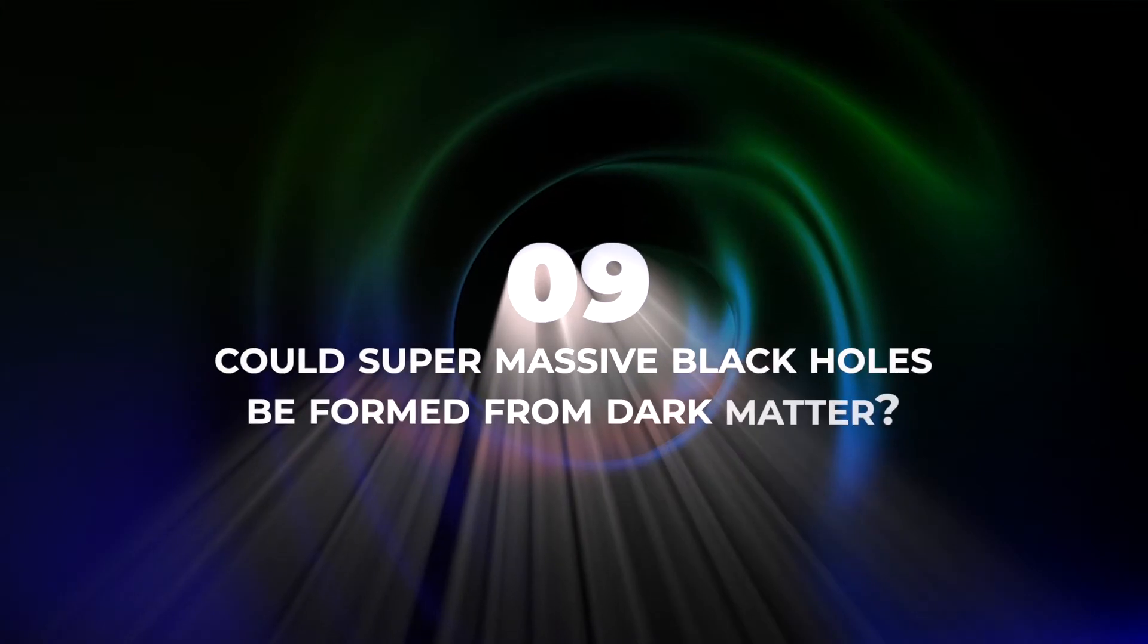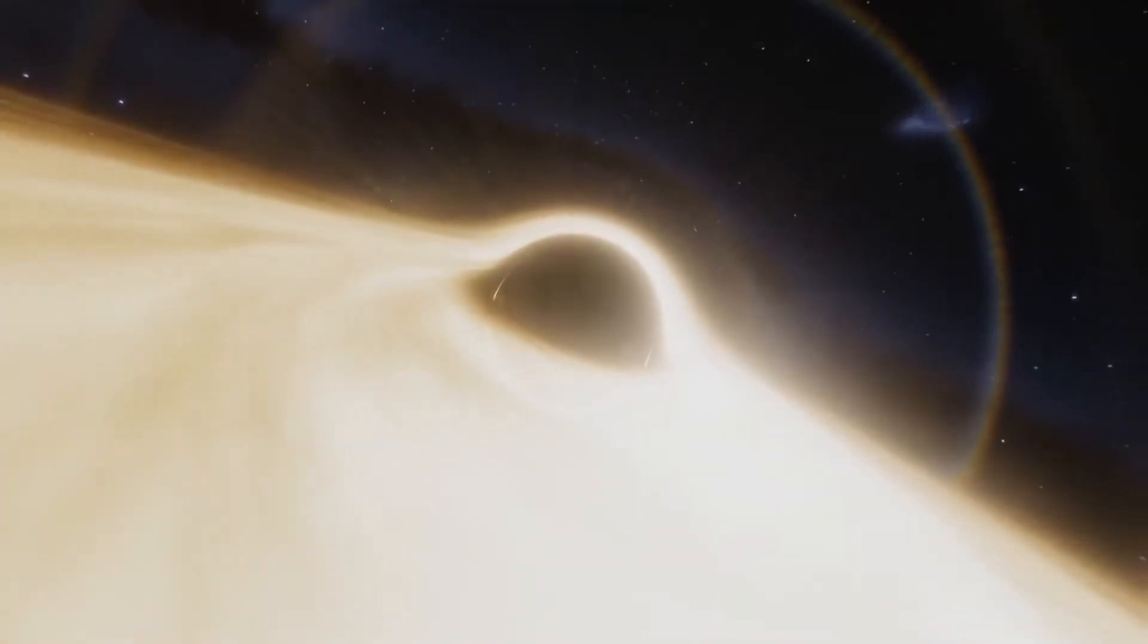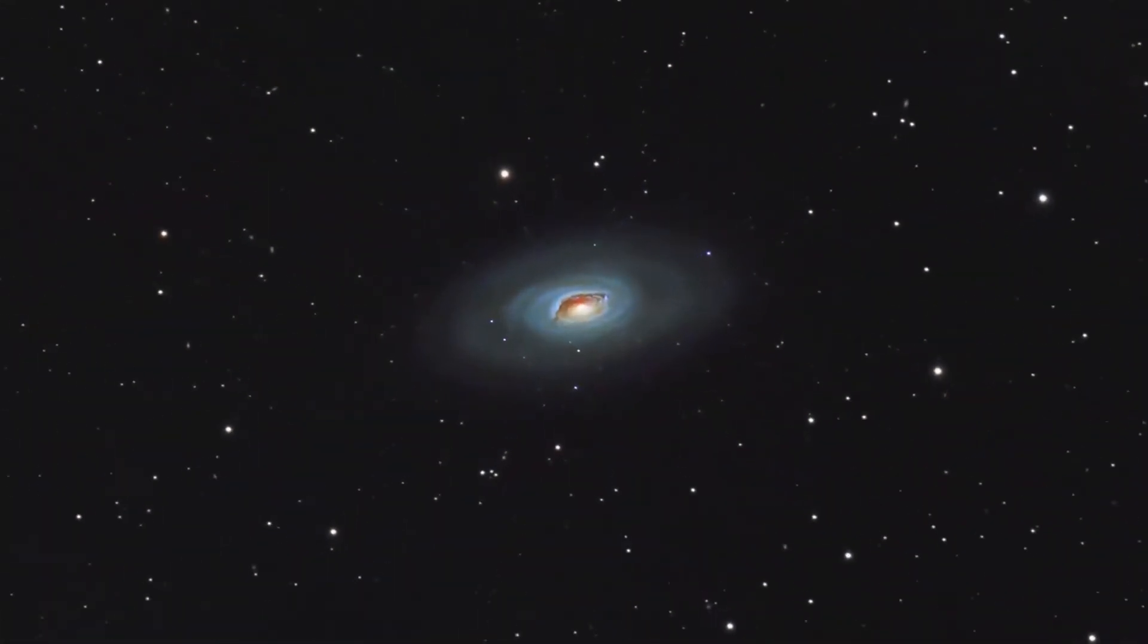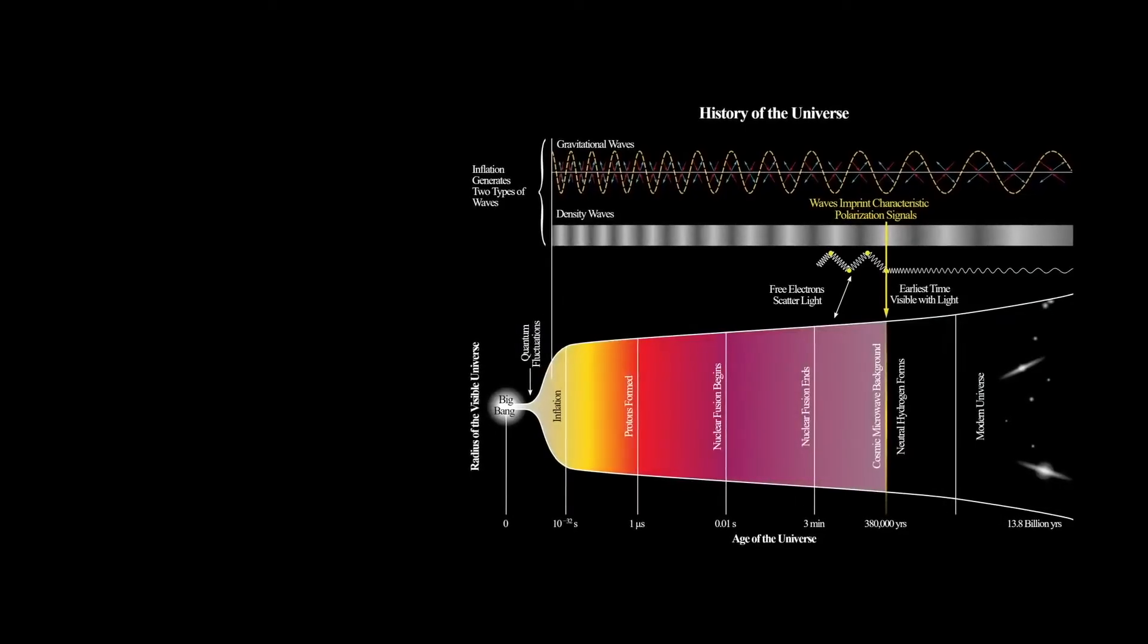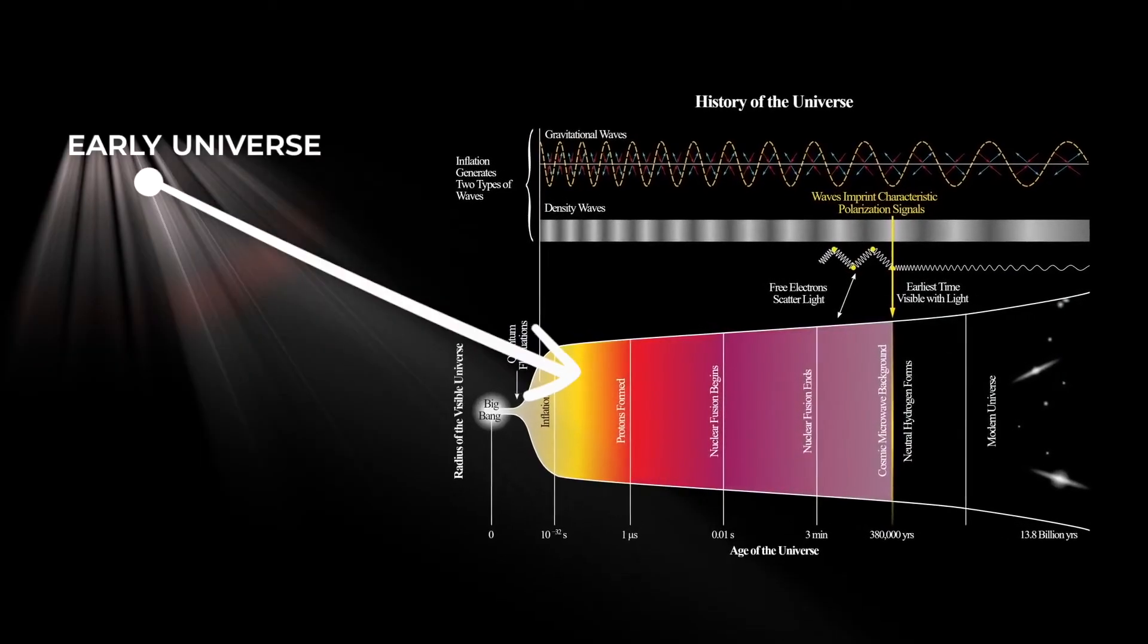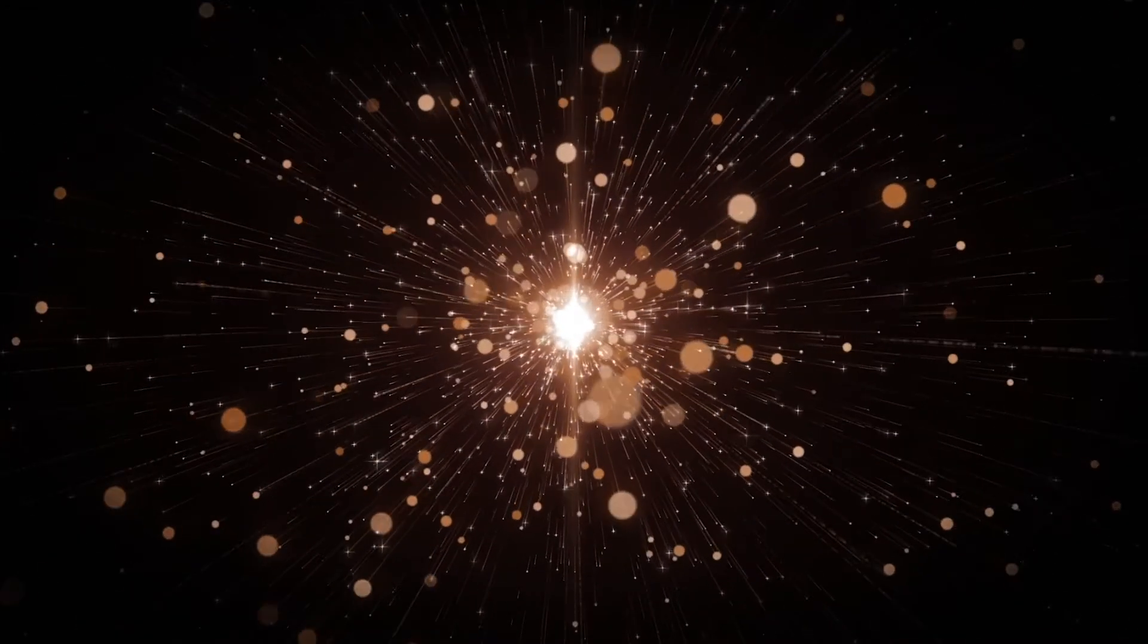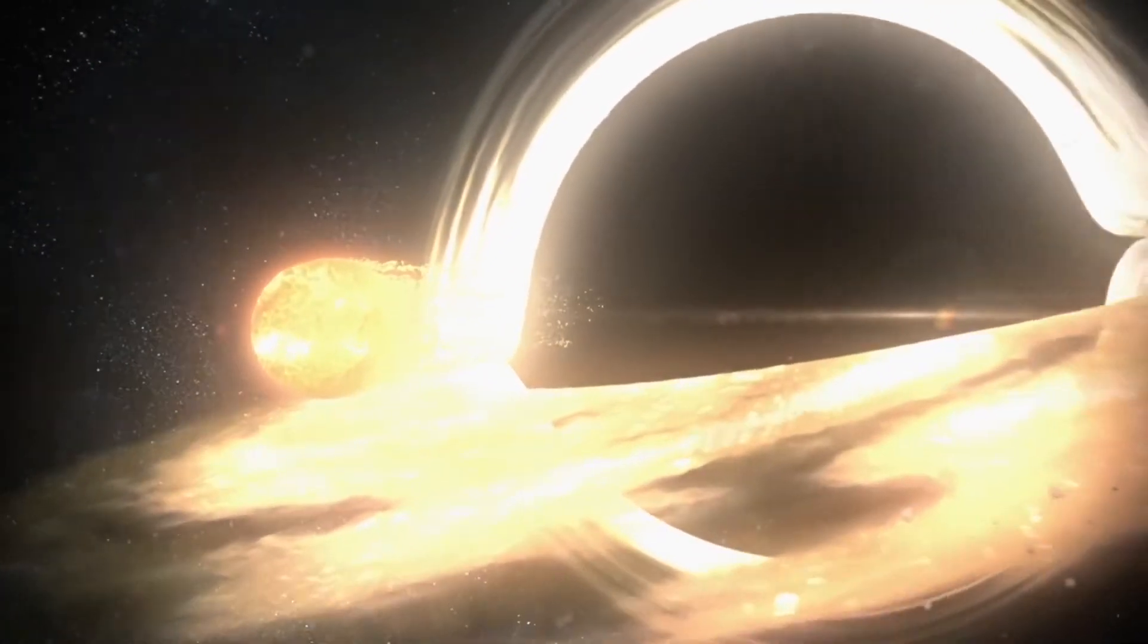Number 9. Could supermassive black holes be formed from dark matter? Supermassive black holes sit at the center of most large galaxies spread throughout the universe, but scientists are still unsure how these colossal objects form. Some theories state that only the environment of the early universe is the only place that allows the formation of supermassive black holes, while others believe that they are formed from ordinary black holes that have absorbed enough matter to grow.